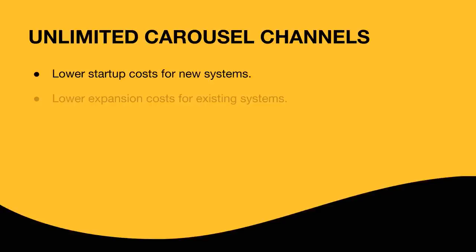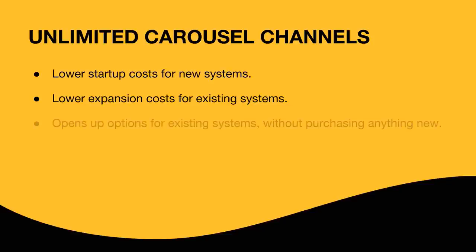Now we want to simplify that. You're just going to count your TV screens and that's what you're purchasing — one piece of hardware for each screen, nothing else. This also helps lower expansion costs for existing systems, making it easier to add on for a new department that wants Carousel. Now you don't have to purchase two things; purchase one and get rolling again with that Carousel expansion.